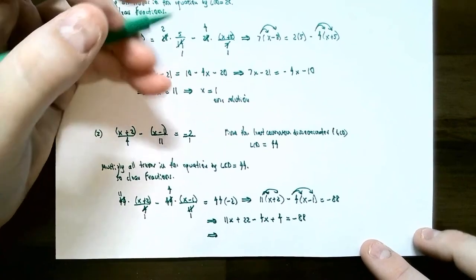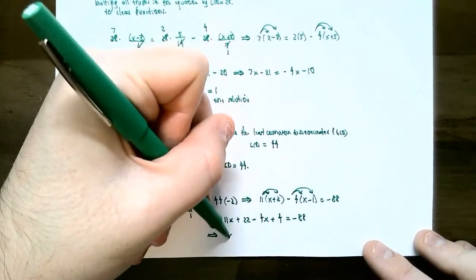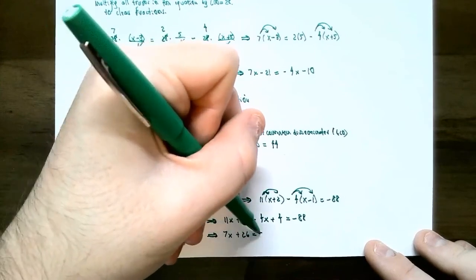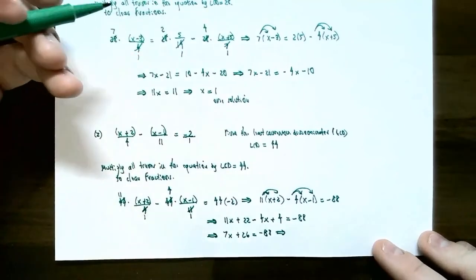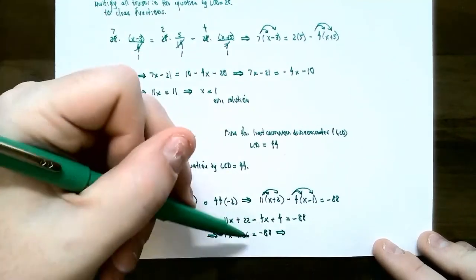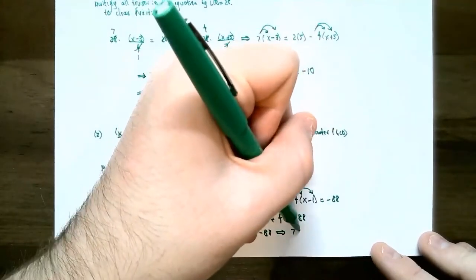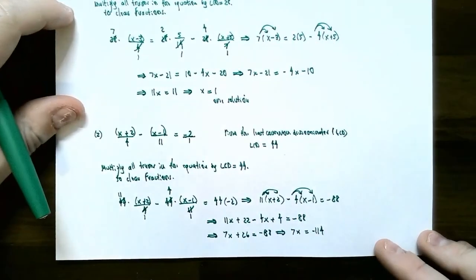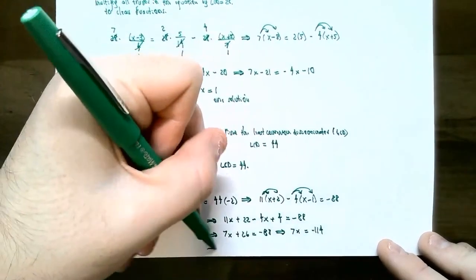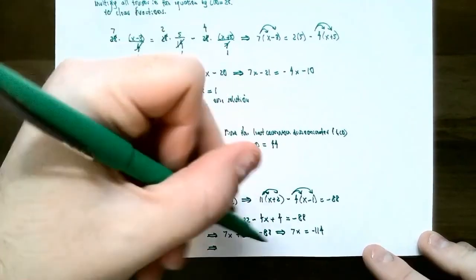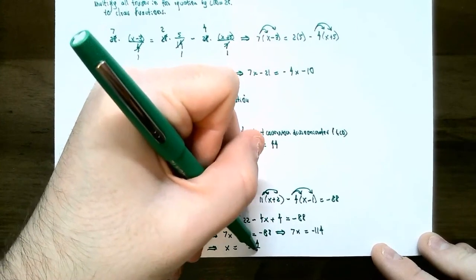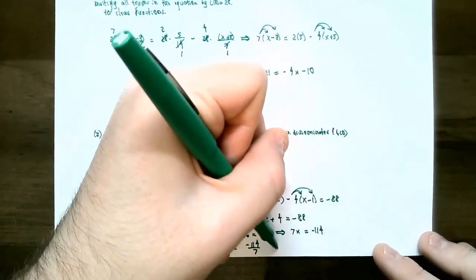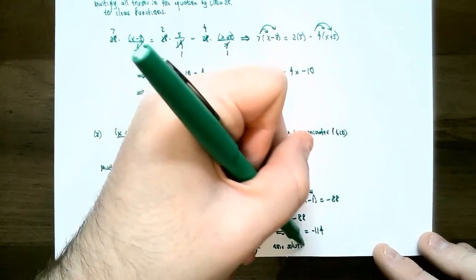Combine like terms on the left: 11x minus 4x is 7x, and 22 plus 4 is 26. So 7x plus 26 equals negative 88. Subtract 26 from both sides: 7x equals negative 114. Divide both sides by 7: x equals negative 114 over 7. This does not reduce, so keep it as a fraction in lowest terms. You still have exactly one solution.